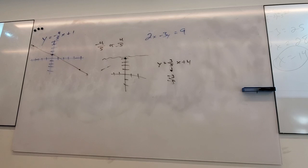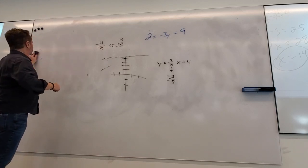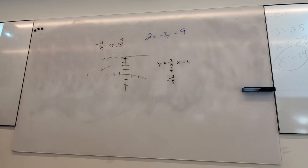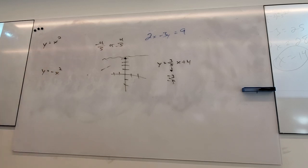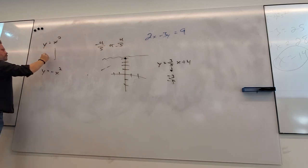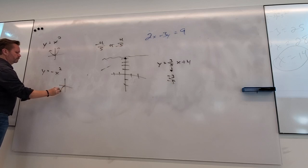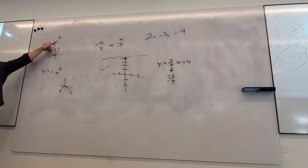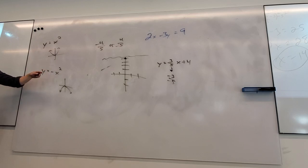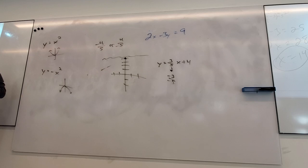Do you see how this is related to the difference between a positive and negative coefficient? What is the big graphical difference between those two functions? One's going up, one's going down. Doesn't that feel like it's related to slope? In calculus, you'll talk about slopes of functions that aren't linear, and then it'll be really clear that the negative there is related to slope.